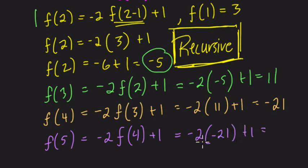A negative times a negative is a positive. It's positive 42, plus 1. Our answer is 43. Let's see if we have that as a choice.